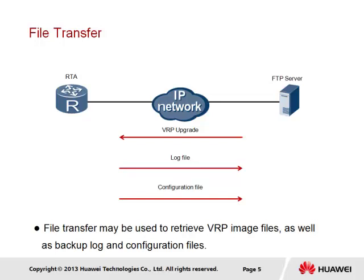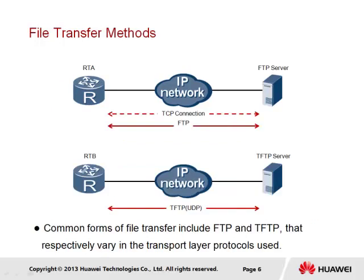RTA may employ the FTP server as a central storage location for retrieving new VRP images for image upgrading, or as a location for storing system logs and backing up configuration files in the event that a configuration file is inadvertently lost. File transfer may be performed using a number of means; however, the common methods employed include FTP and TFTP.